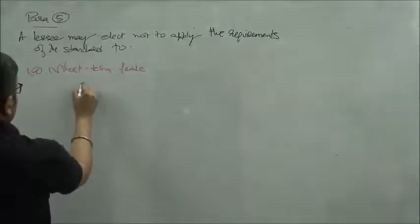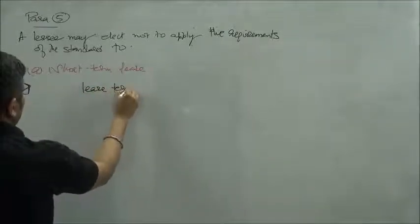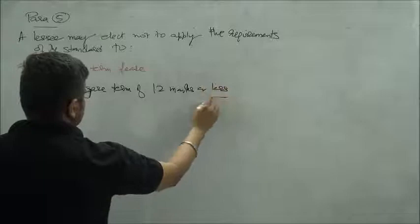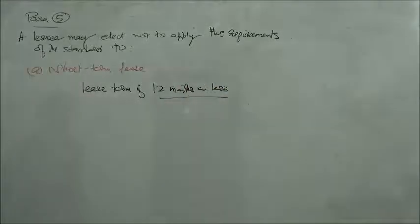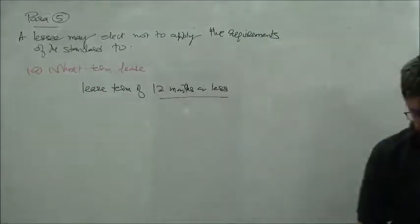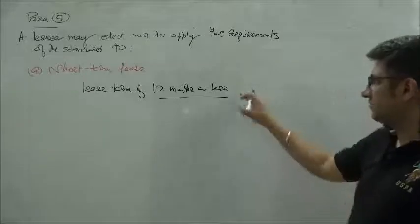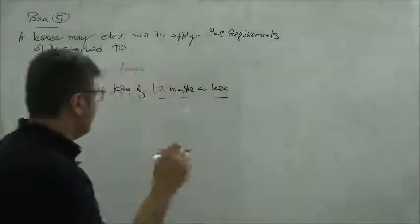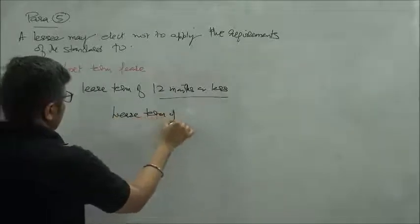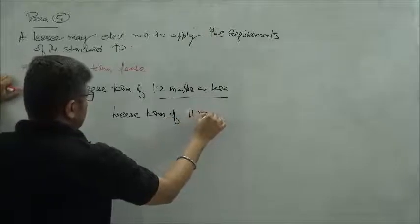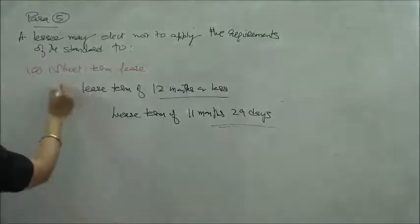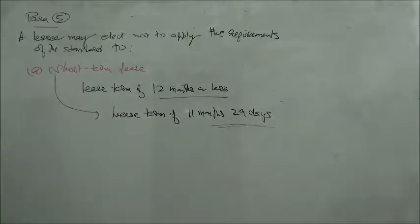The meaning of lease term is given later in the standard, but for now, a lease term of 12 months or less means that if I get into a lease period of 11 months and 29 days, this would be an example of a short-term lease.